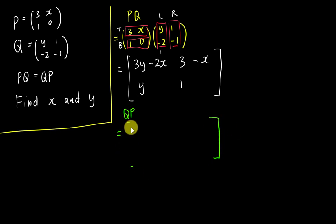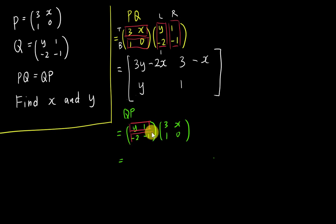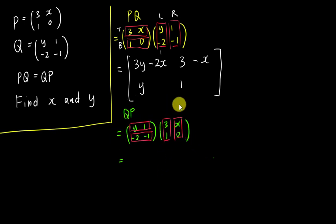For QP, you need to rearrange the order. Q comes first: Y, 1, negative two, negative one. Then P: 3, X, 1, 0. Like before, for the first matrix I group them into horizontal boxes, and for the second matrix into vertical boxes. Then I identify top, bottom, left, and right positions, and start the multiplication.